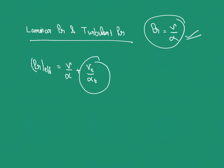The turbulent Prandtl number is a non-dimensional term defined as the ratio of momentum eddy diffusivity to heat transfer eddy diffusivity, and it describes the mixing/rotation of fluids. The simplest model for turbulent flow is Reynolds' analogy, which yields a turbulent Prandtl number of one. In this special case, the velocity and temperature profiles are identical. I hope you enjoyed this video — thank you for watching.